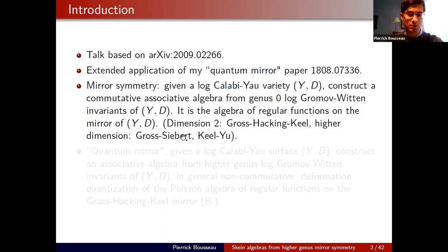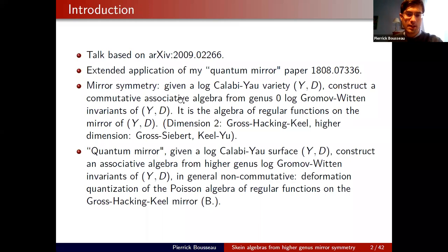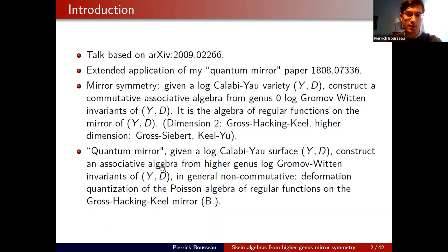The starting point is a quantum mirror construction in which one replaces counts of Maslov index zero holomorphic disks by their higher genus analog. In dimension two, for a log Calabi-Yau surface (Y, D), it is possible to deform the genus zero construction by accounting for higher genus curves. The result is an associative algebra that is in general no longer commutative — a non-commutative deformation of the genus zero commutative algebra.